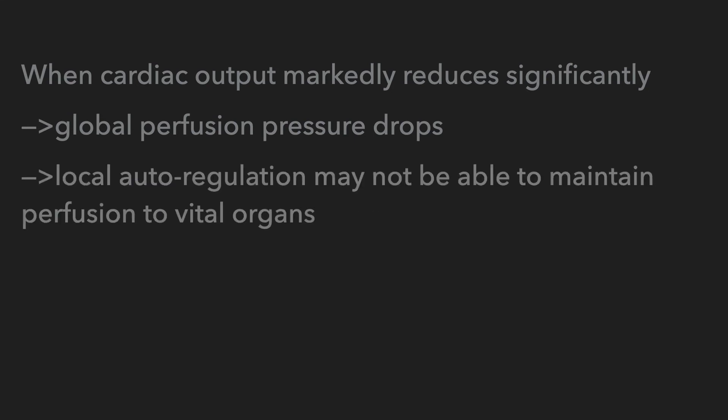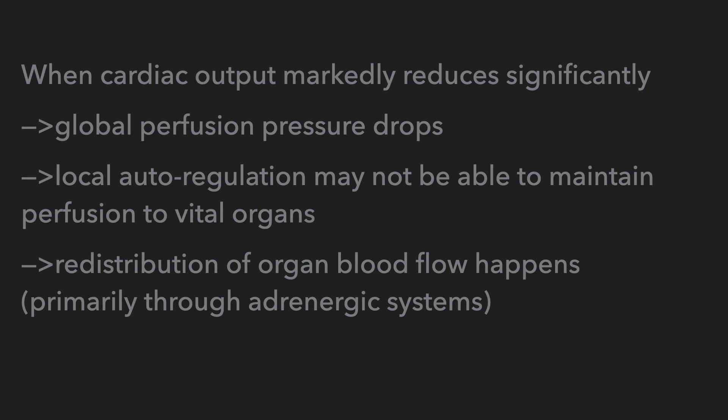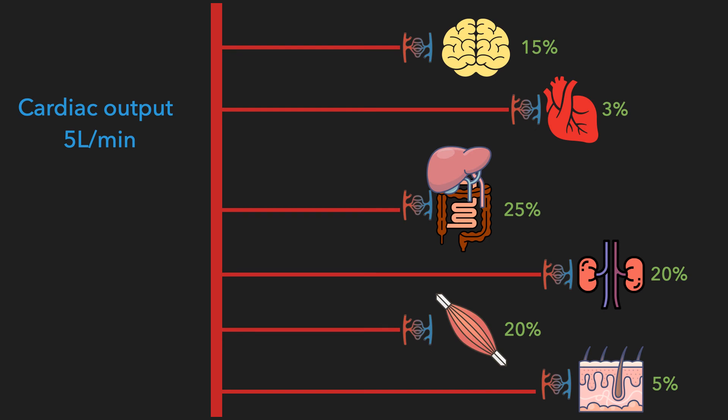When cardiac output drops significantly, you have a global perfusion pressure drop. Local autoregulation may not be able to maintain perfusion to vital organs. Eventually, you have a phenomenon called redistribution of organ blood flow, primarily regulated by the adrenergic system. During normal resting conditions, cardiac output is around 5 liters per minute, distributed to different organs at different proportions — for example, 15% to the brain and 20% to the kidney. Before blood reaches the organs, arterioles, capillaries, and pre-capillary sphincters act like switches to regulate blood flow and ensure constant supply to each organ.